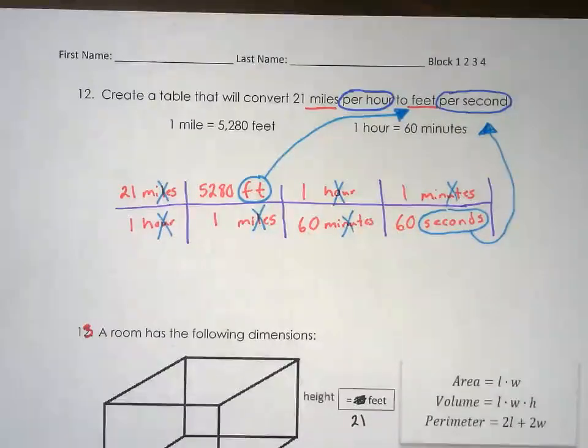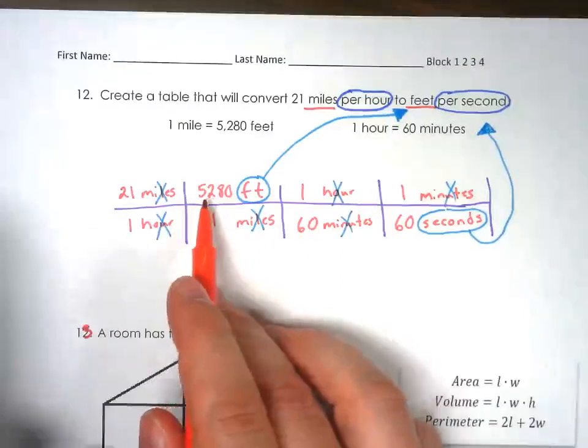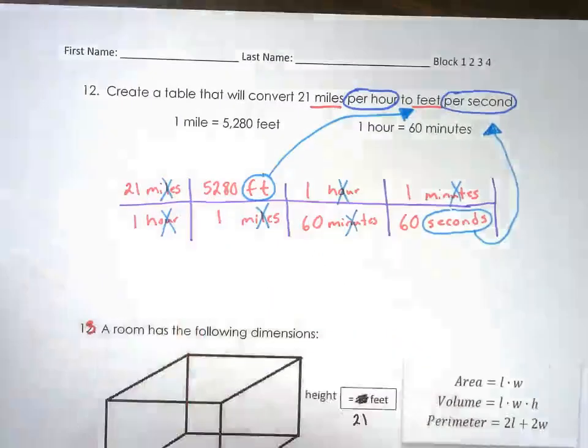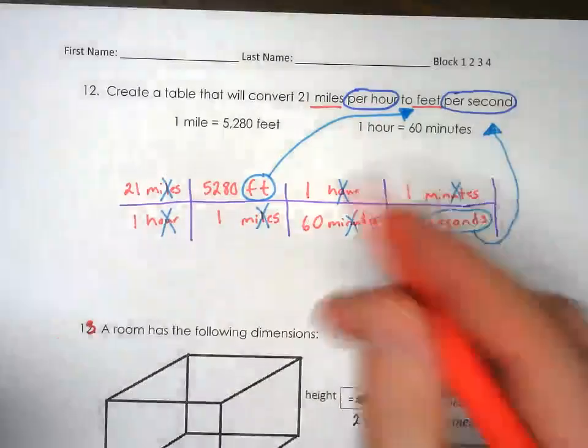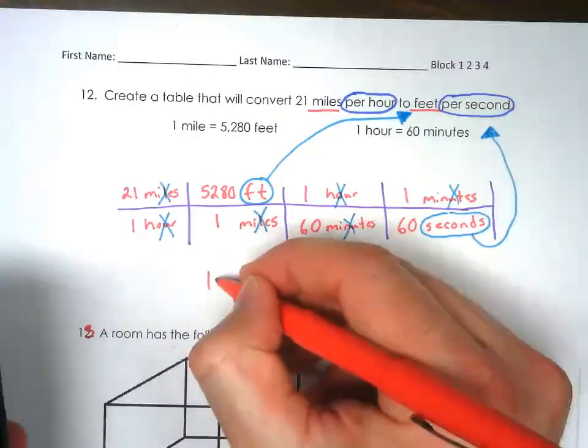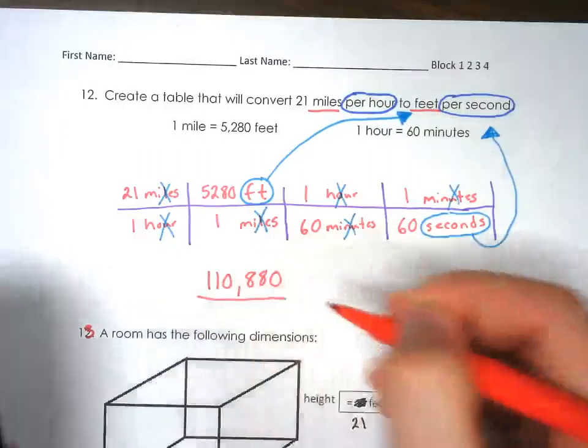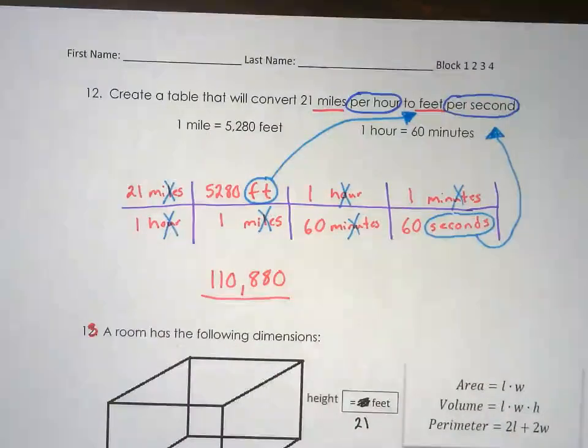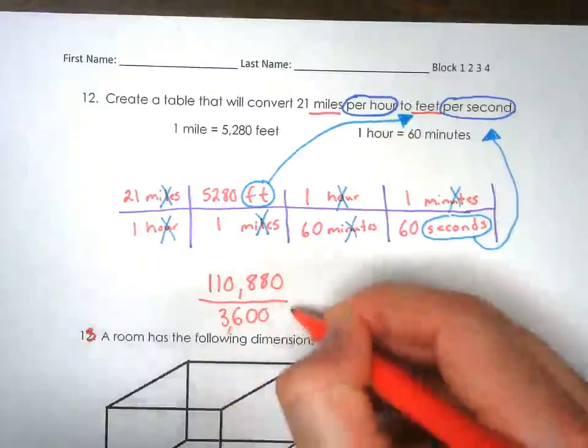Now all you do from here is multiply all the numbers on the top. So 21 times 5,280. I'm going to plug it into my calculator: times 5,280. That's going to give us 110,880. That's on top. What's on bottom? You have 1 times 1 times 60 times 60.